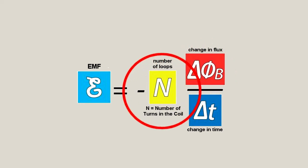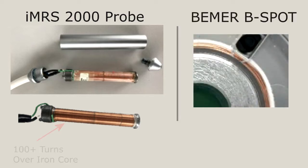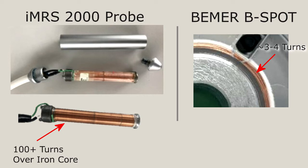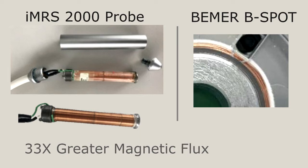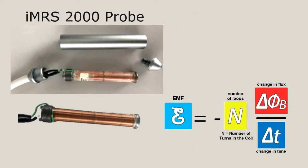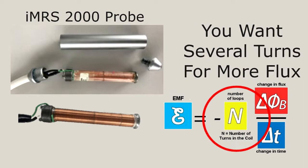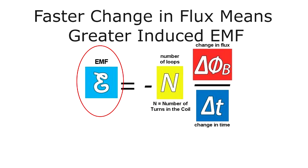The more turns you have in your coil, the more flux is created. For example, the IMRS probe has over a hundred turns around an iron core, while the B-spot only has around three or four turns. That means the magnetic flux for a given current is about 33 times greater on the IMRS probe than the B-spot — and actually more than that, because the probe has a ferromagnetic core that amplifies the field even further. The point is you want several turns of tightly wound copper to give you a greater flux. Now let's look at delta phi over delta T — the change in flux. The faster you change the magnetic flux, the greater the induced EMF, per Faraday's law.